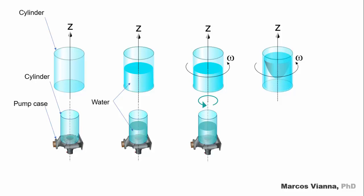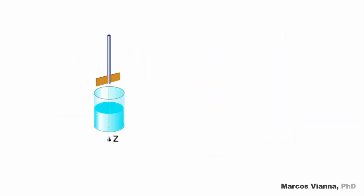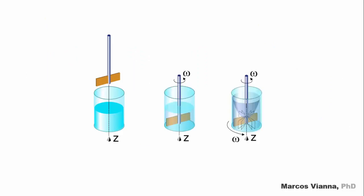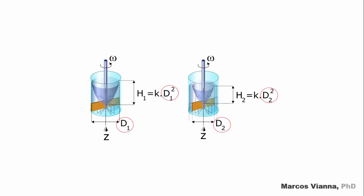Now, let us see what will happen when we put the casing of the pump into rotation. Well, we have to agree that it would be quite impractical. So, it will be better to rotate the water inside the casing using an impeller. See what will happen when we put an impeller inside the cylinder. When it rotates, the water inside the cylinder will form the same paraboloid that we saw when the cylinder was rotating.